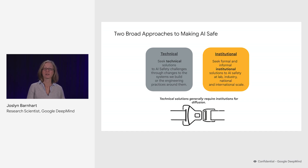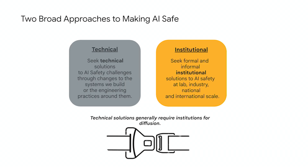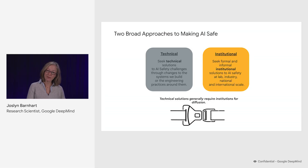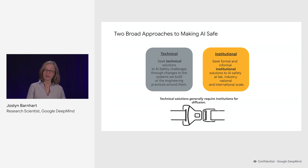For example, if we think about something like the seatbelt, the technology itself was actually created far in advance of the full diffusion of seatbelt wearing to all drivers and all relevant actors. So we think about the need for things like laws, institutions, norms, and standards to ensure that all relevant actors are engaged in safe practice.